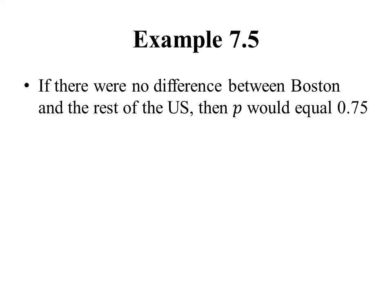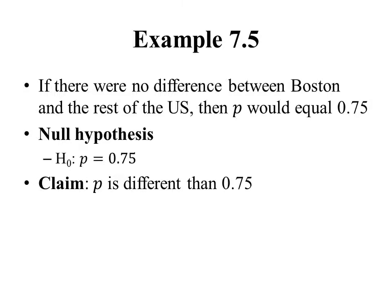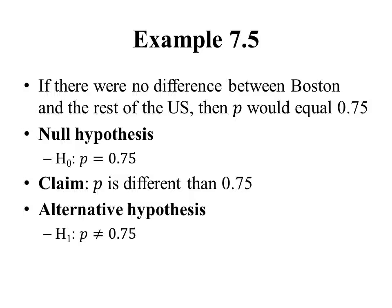Now we need to set up our hypotheses. The null hypothesis is the statement of no change or no difference, and the alternative hypothesis is the investigator's claim. If there were no difference between Boston and the rest of the U.S., then P would equal 0.75. So the null hypothesis is P equals 0.75. The original claim was stated as a percentage, but we always use the decimal equivalent. The alternative hypothesis is that P is not equal to 0.75.